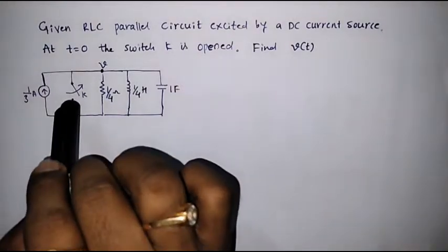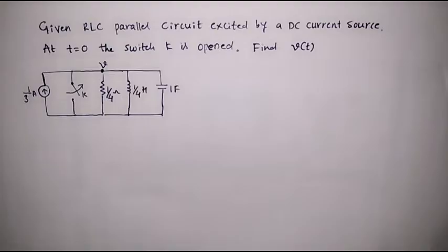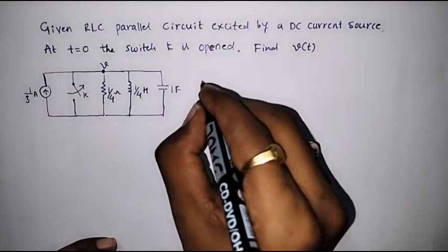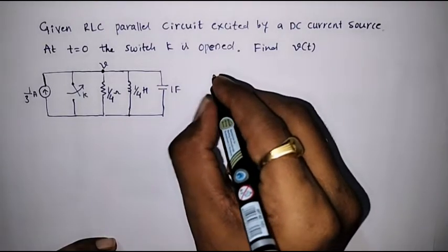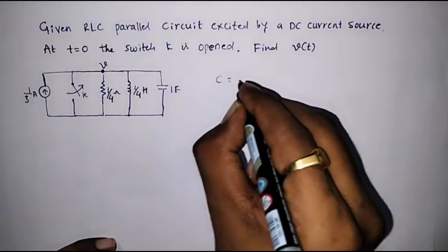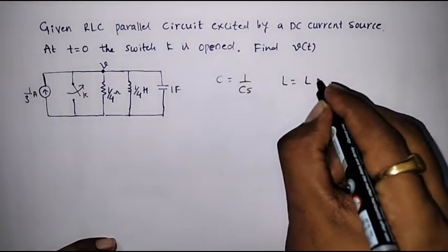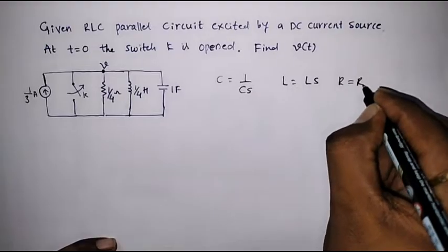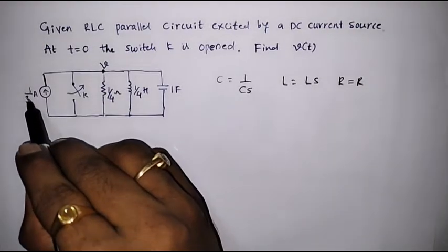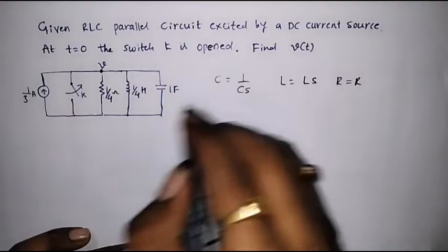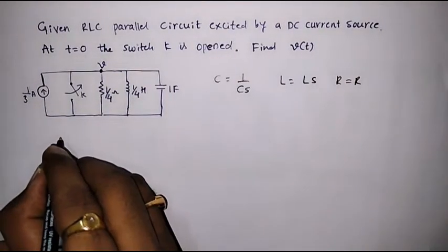We will assume that at t equal to 0, the switch is opened. The analysis can be done using the S-domain circuit — it will be simpler. To represent the circuit in S domain, we should replace capacitors by 1 upon CS, inductors by LS, and resistors are kept as they are. If there exist any constants, those should be replaced by constant by S. So in this case, it will be 1 by 3S. I will draw the S-domain circuit.